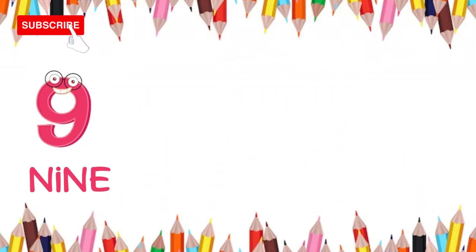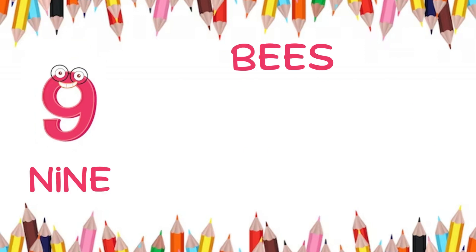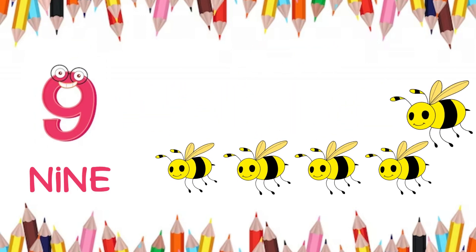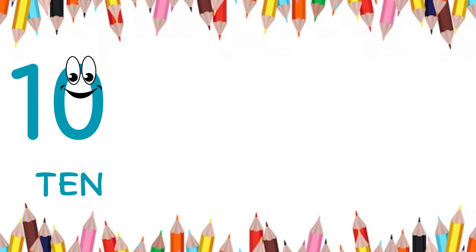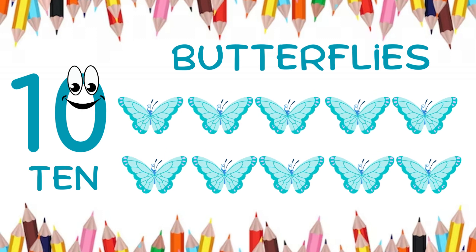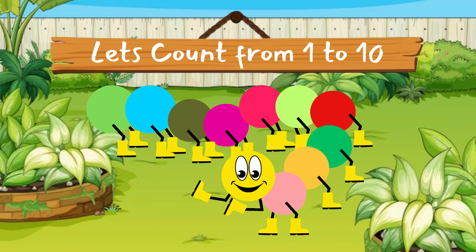Nine — N-I-N-E — nine. Nine bees. Ten — T-E-N — ten. Ten butterflies. Hey, we have learned numbers one to ten! Let's play a small game of counting, shall we?